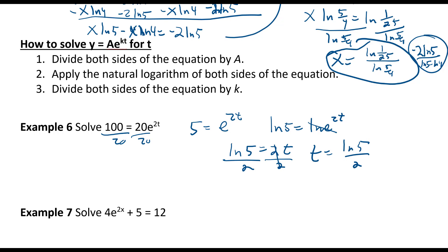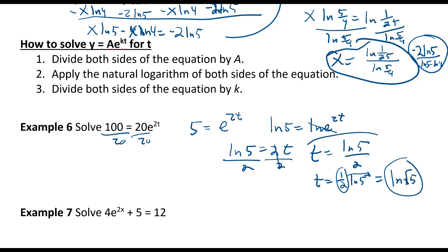You could take it one step further: t equals (1/2)·ln5, and bringing that coefficient in as a power gives t equals ln(√5). Both forms are acceptable answers.